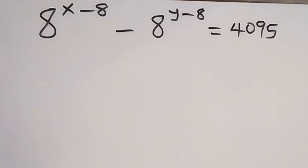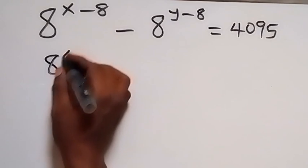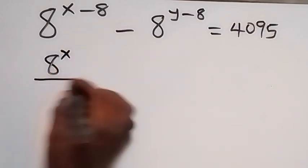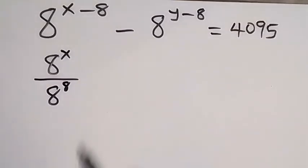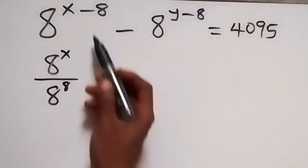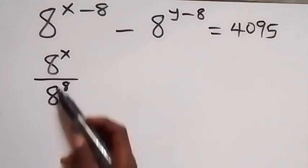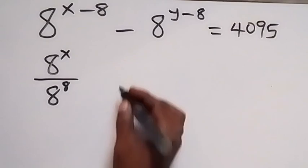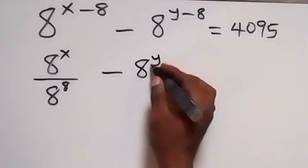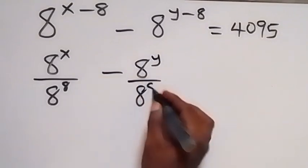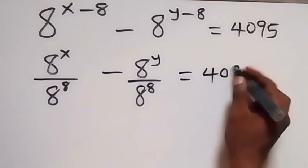From here, we can rewrite this using the law of indices. This will be 8 raised to power x divided by 8 raised to power 8, minus 8 raised to power y divided by 8 raised to power 8, which is equal to 4095. When we subtract the powers, that means we have division of numbers with the same base.